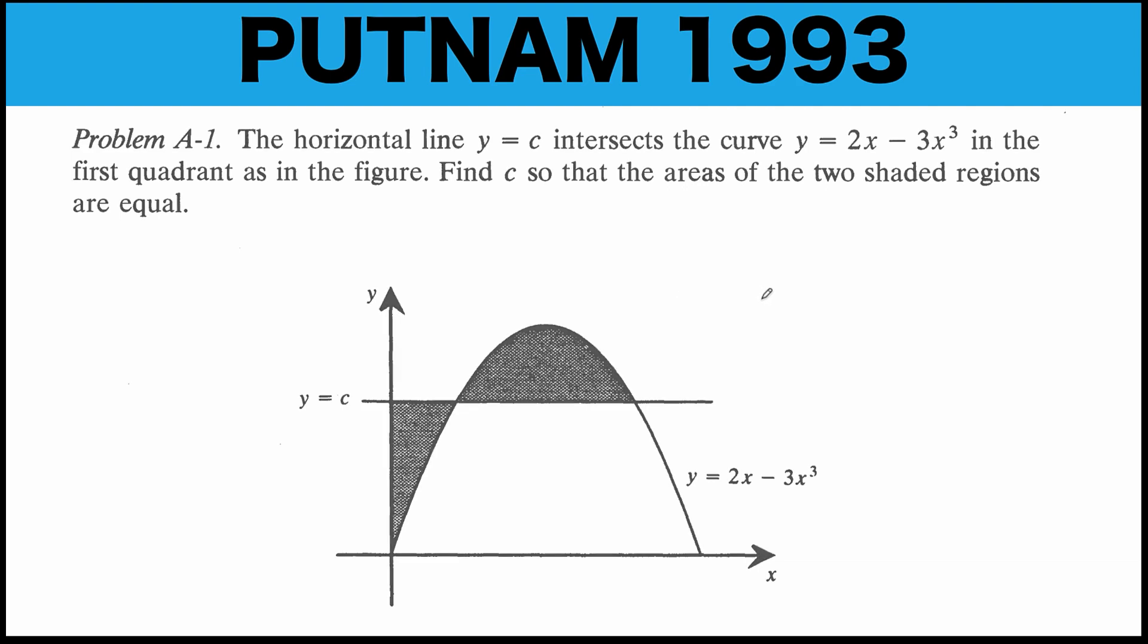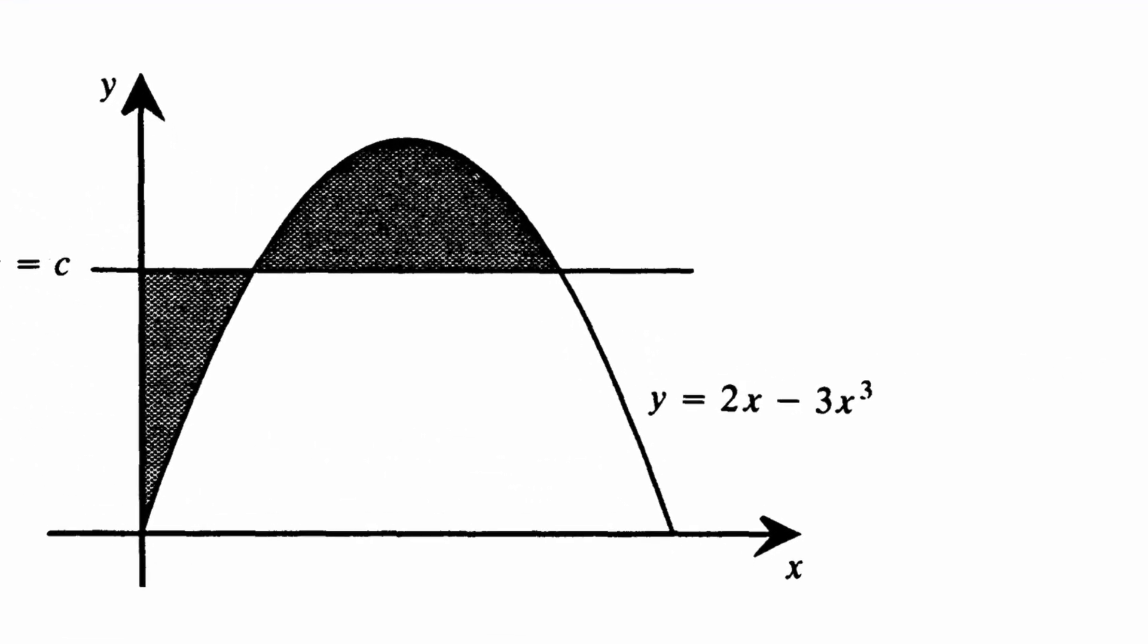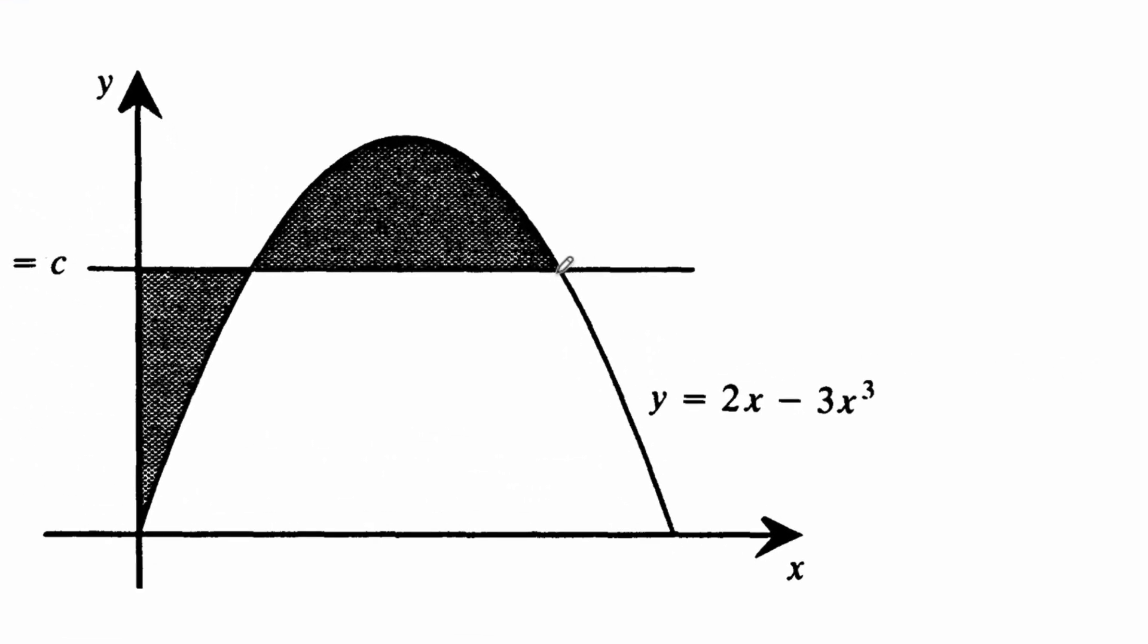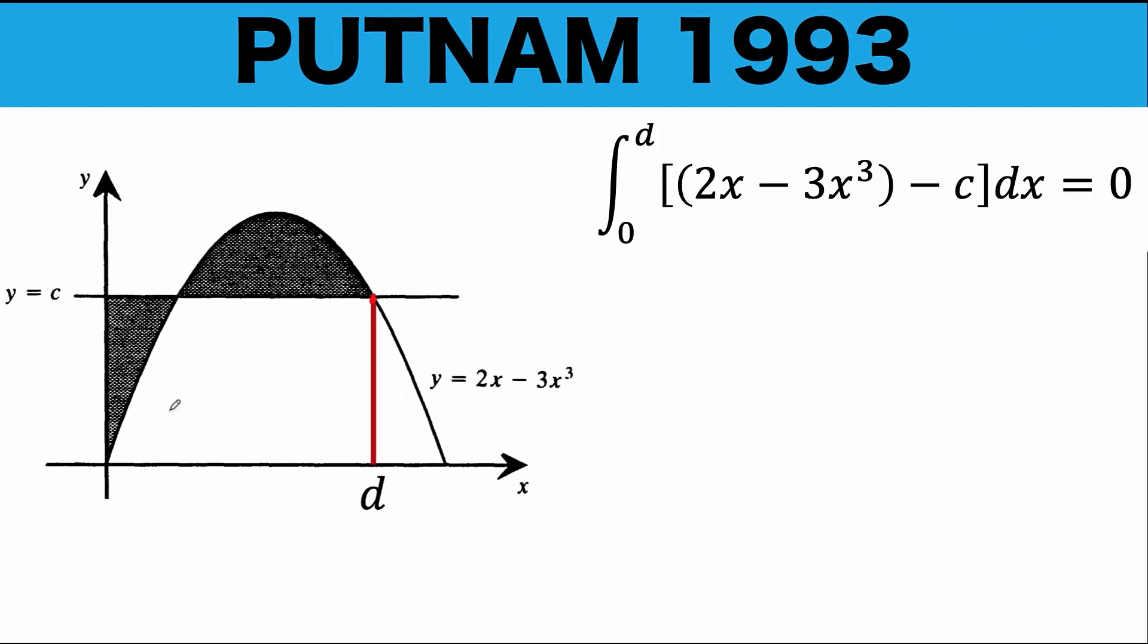Now, let's solve this problem together. The first thing that we are going to do is let's identify this point of intersection between the curve and the line y equals c. And let's denote that to be x equals d. Then, since we would like to find the area under the curve, we can use definite integration.